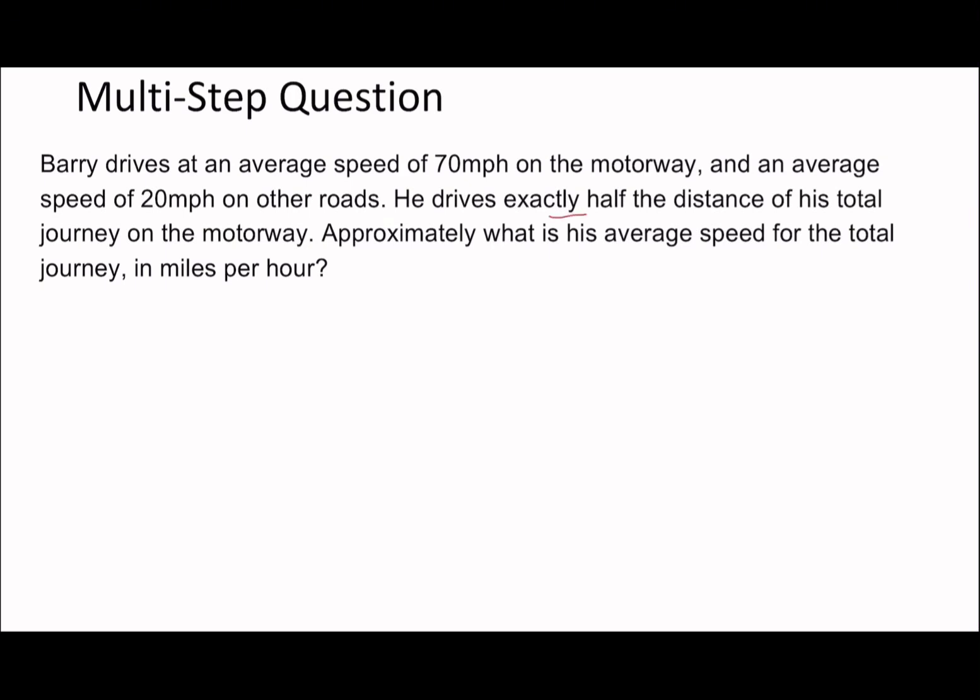But it's kind of multi-step because there's a couple of things you have to do in order to get to that final answer. So in terms of what it says, it says that exactly half the distance is driven on the motorway. So the other half is therefore going to be driven on the other roads. So we don't actually know what the time spent is. So the idea is basically, so speed is distance over time, we are trying to find speed. So we need to know the overall distance divided by the overall time.